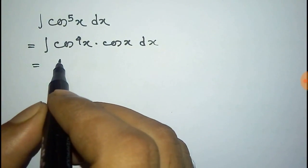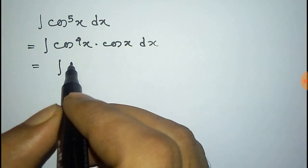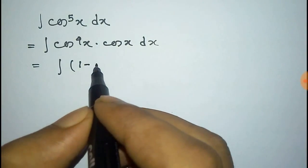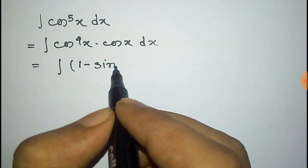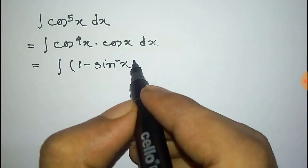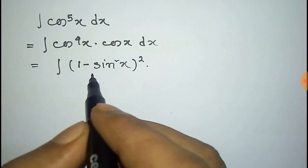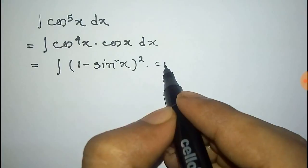Now this cos to the power 4x can be written as 1 minus sin square x and total whole square into the remaining cos x dx.